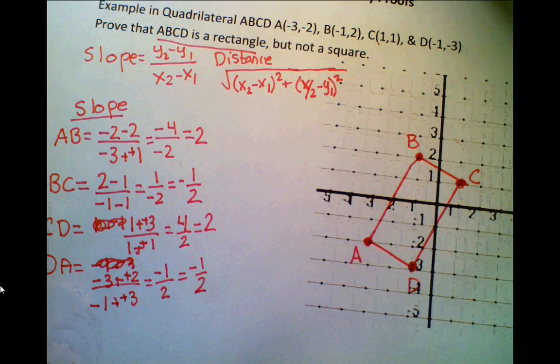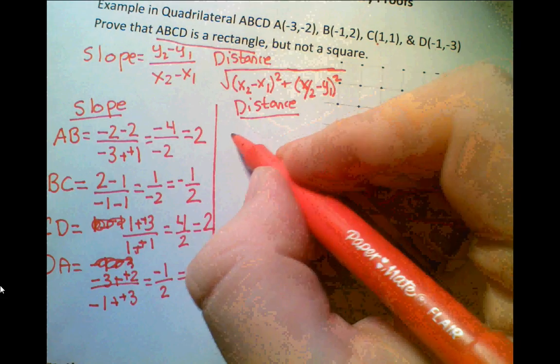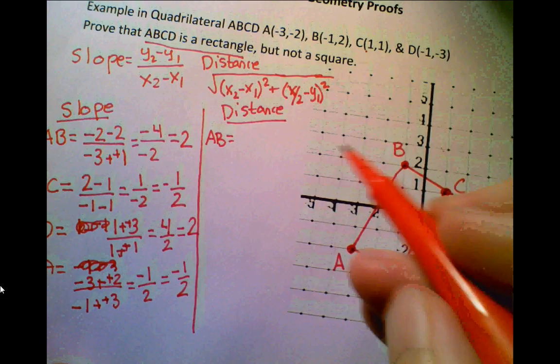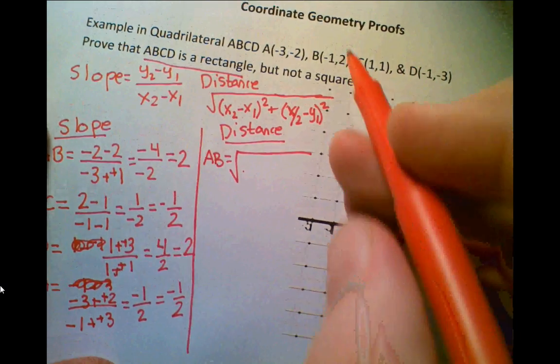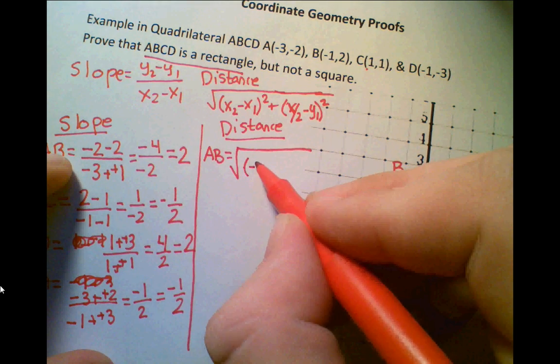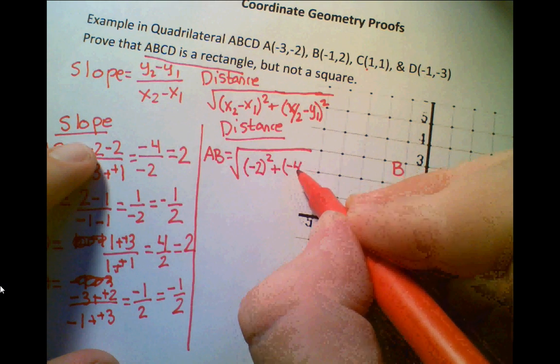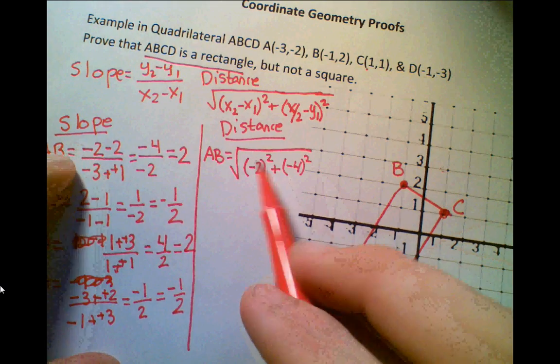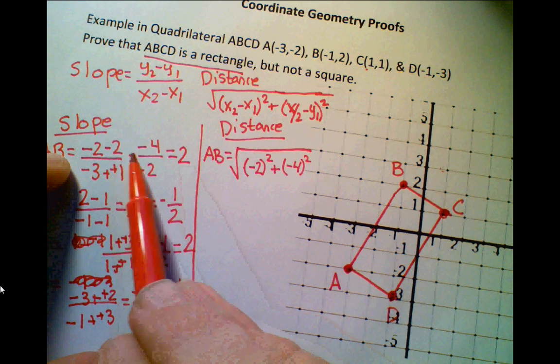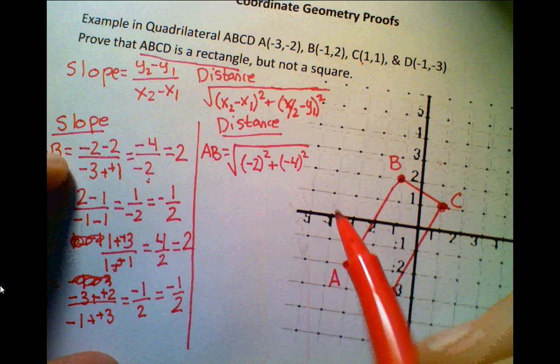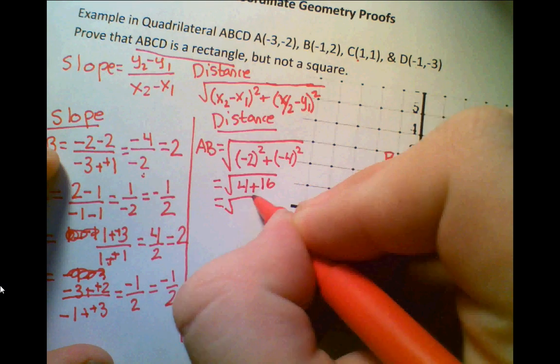Now, for the distance, let's do the same thing, AB. Now, we could do the square root of, remember, we take the difference of the x values, so it's going to be -2 squared plus -4 squared. Now, how did I do that really quickly? You notice over here, we already did the differences between the x values and the differences of the y's. So I can just sort of plug in the numbers here, -2 and -4. Now that's going to be equal to radical 4 plus 16, which equals radical 20. You can leave it in radical form.